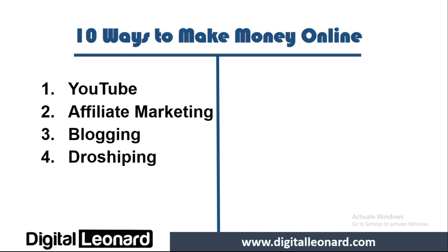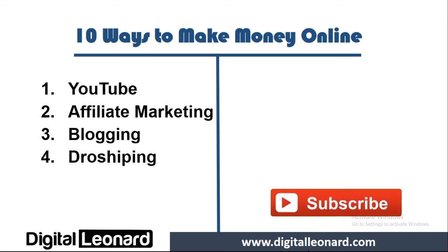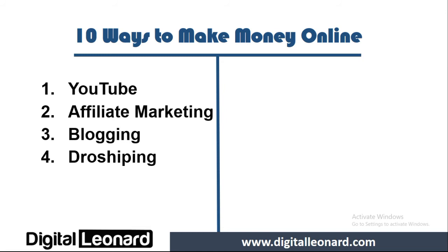The next one is dropshipping. I will leave a link in the video description below where you can learn how to set up a dropshipping website. Dropshipping is setting up an e-commerce website, but in this case you don't have the product. Using Aliexpress, you market their products on your site. When people buy from your site, you forward the customer's details to the supplier, the supplier ships the product, and the difference between what you paid the supplier and what the customer paid you becomes your profit — no inventory needed.